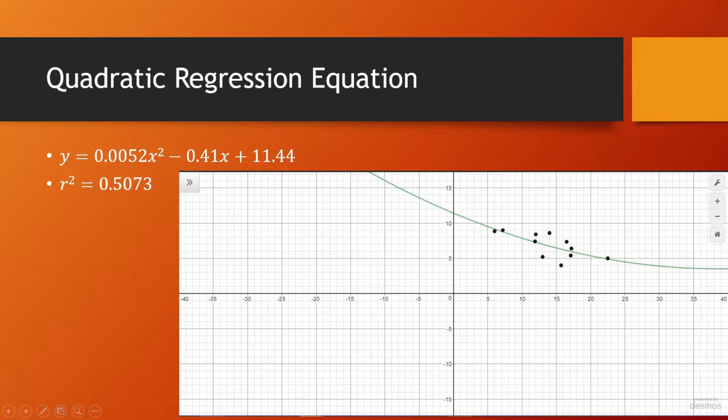Okay, so now we're at the quadratic regression equation. Our r squared value turned out to be 0.5073 which is higher than the linear regression equation and you can see that the quadratic regression equation actually does a pretty great job in representing the value points and it has a lesser spacing between the highest points and the lowest points and it intersects some of the points along the way.